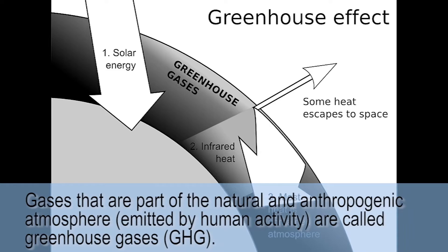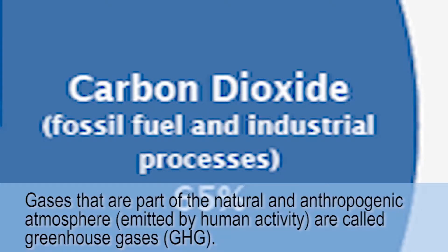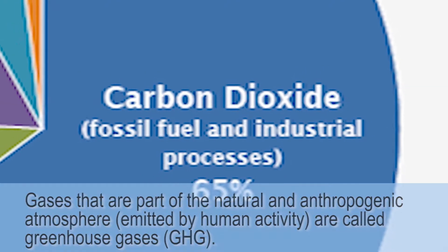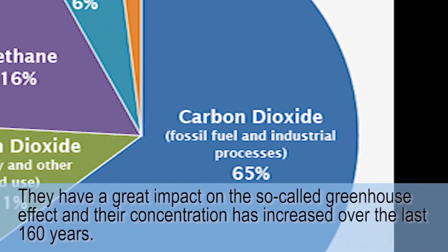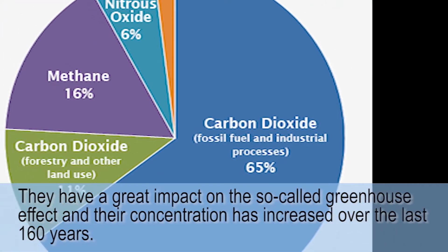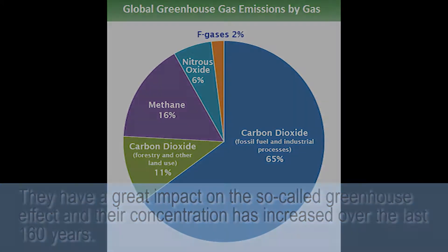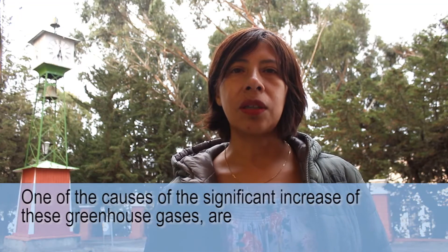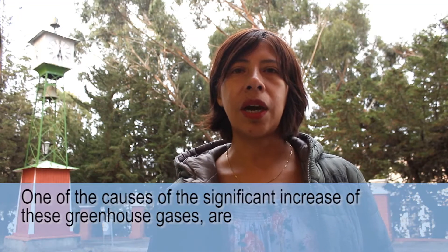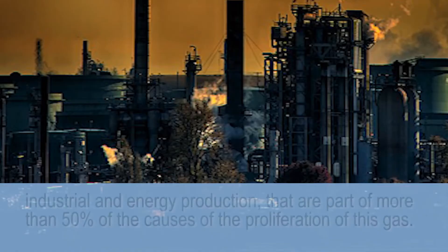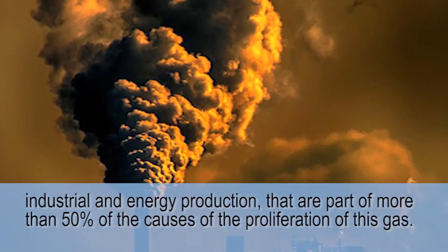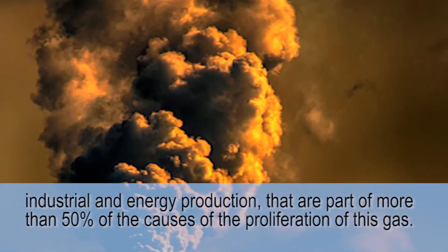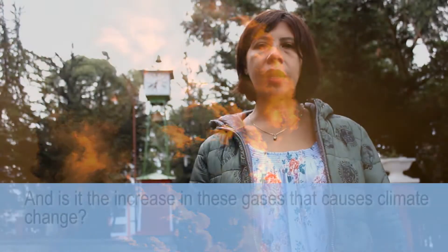Gases that are part of the natural and anthropogenic atmosphere are called greenhouse gases. They have a great impact on the so-called greenhouse effect, and their concentration has increased over the last 160 years. One of the causes of the increase of these greenhouse gases is industrial and energy production, which account for more than 50% of the causes of the proliferation of these gases.